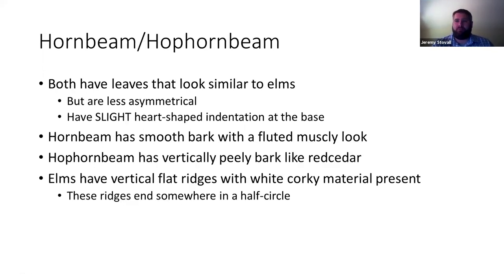Hornbeam and hop hornbeam may be a little more difficult online. Their leaves look kind of like elms — doubly serrated, about the same shape — but they're more symmetrical. Elm leaves always have that lopsided base. On hornbeam and hop hornbeam, where the petiole connects to the base of the leaf, there's going to be a slight heart-shaped indentation. You do not see that on elms. If you have a bark photo, pay attention to it — that bark photo is going to be critical.